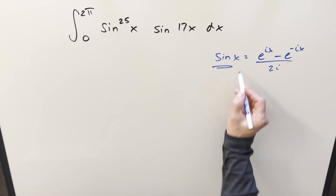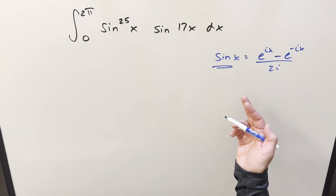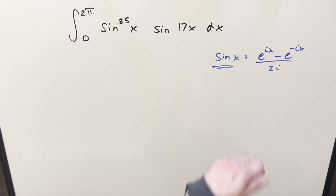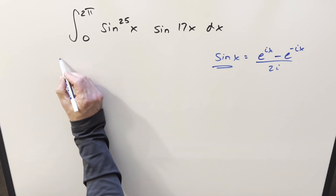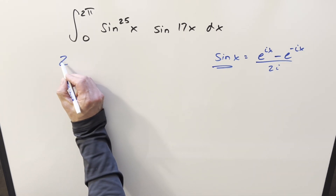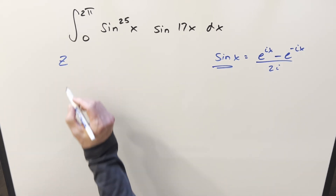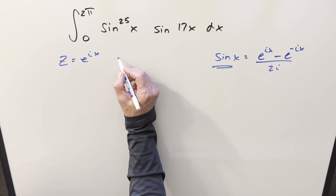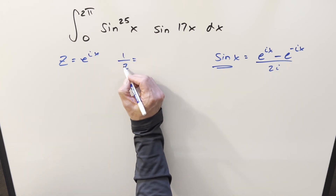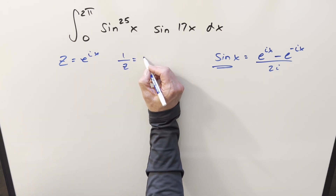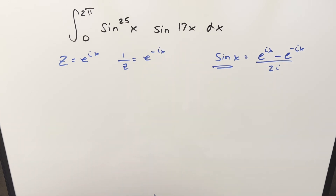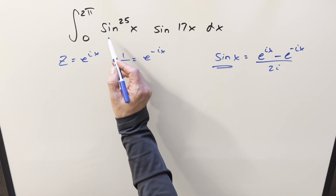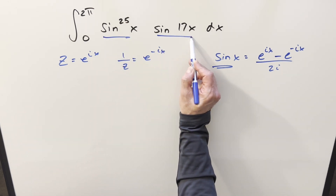Over here to the right we've got our complex definition of sin(x). This is really easily derived from Euler's formula. What we're going to do, in order to simplify this and save some writing, we're going to create something — we're just going to call z equal to e^(ix). And so 1/z is going to be the same thing as e^(−ix).